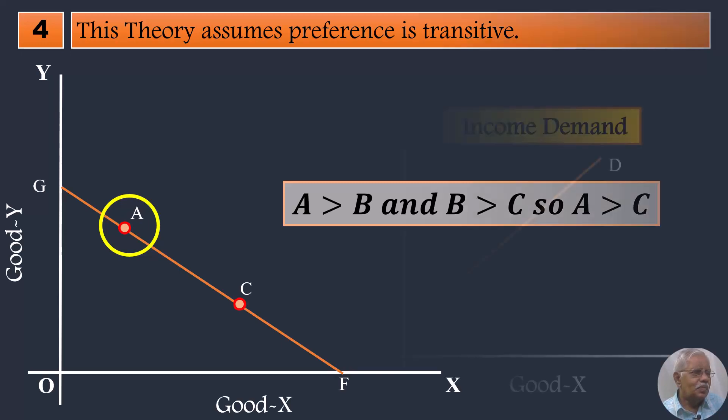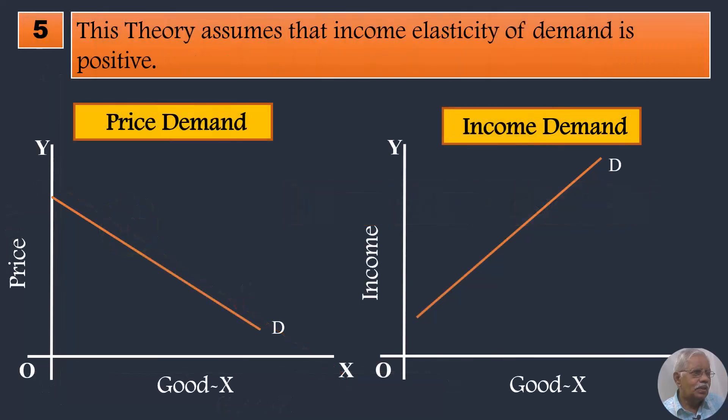Fifth assumption, it also assumes that income elasticity of demand is positive. Samuelson deduced his law of demand based on this important assumption. According to him, his law of demand will hold good only when there is positive relation between income and quantity demanded. Positive relation means, when the income increases, demand goes up and when income falls, the demand also will fall.